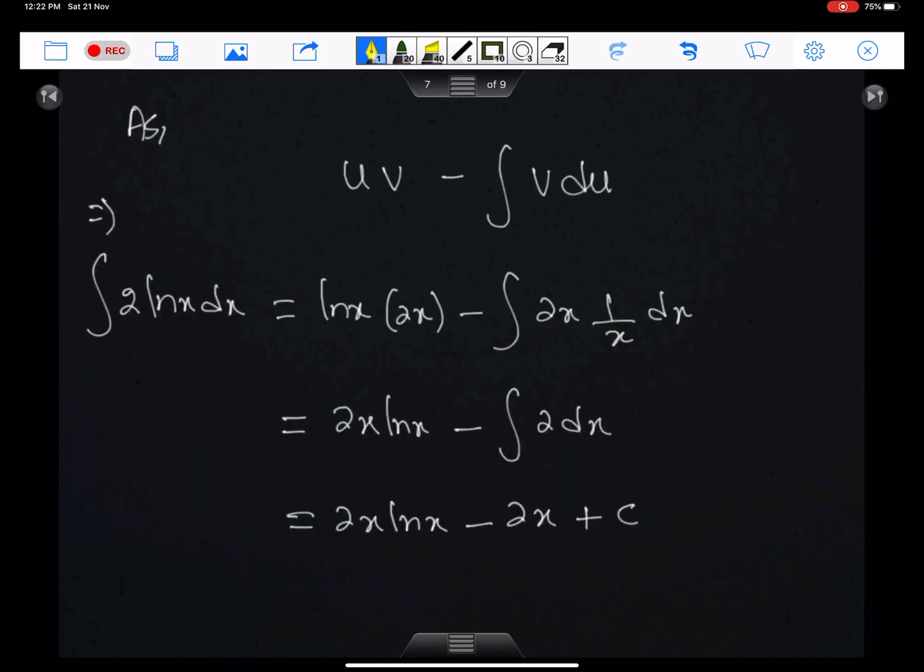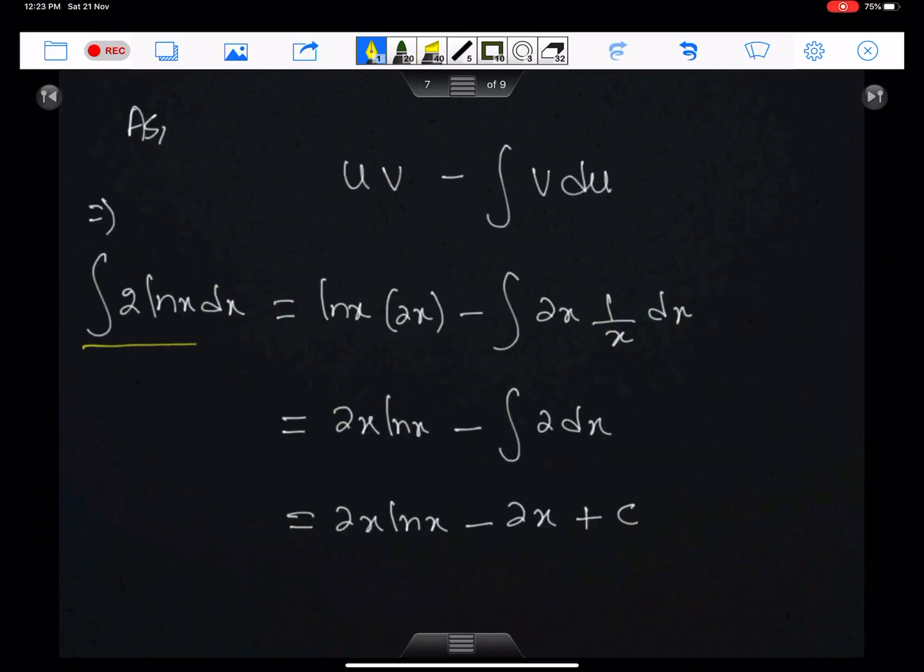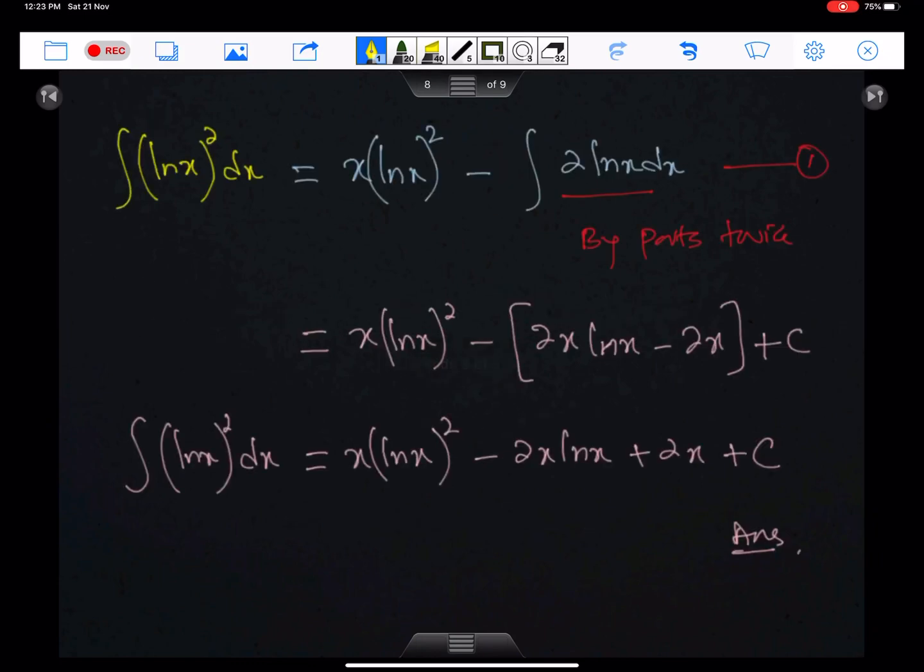This is the by-part formula. I am eliminating this negative sign. So I am using this: this is u, this is v, this is v and this is du. The simplified form of this function is 2 dx. Now we need to just integrate this 2 dx thing and the answer is 2x. Now substitute this answer into equation 1. This is the equation number 1. By substituting the answer here, we have this answer. This is the way to use the by-parts twice.